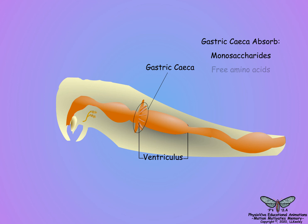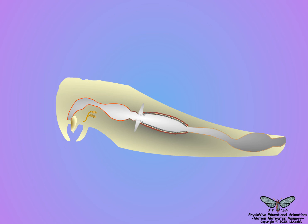Although gastric caeca are located at the anterior of the ventriculus, the caeca absorb nutrients both as they enter from salivary digestion in the crop and by countercurrent flows of digested nutrients within the ventriculus.